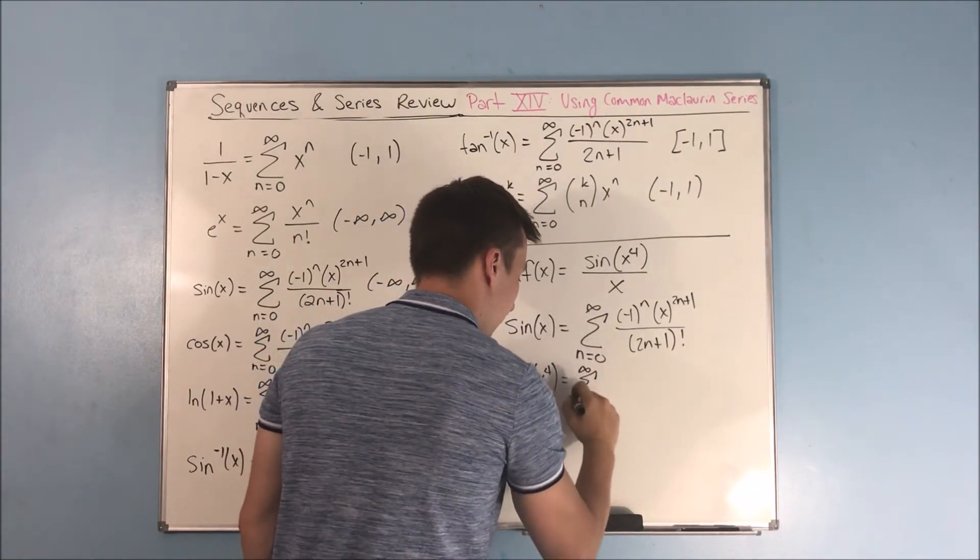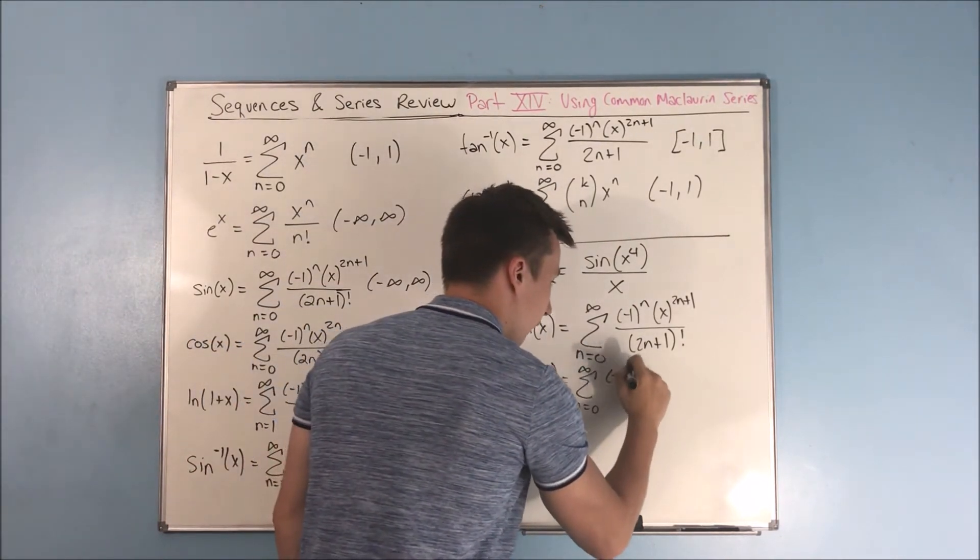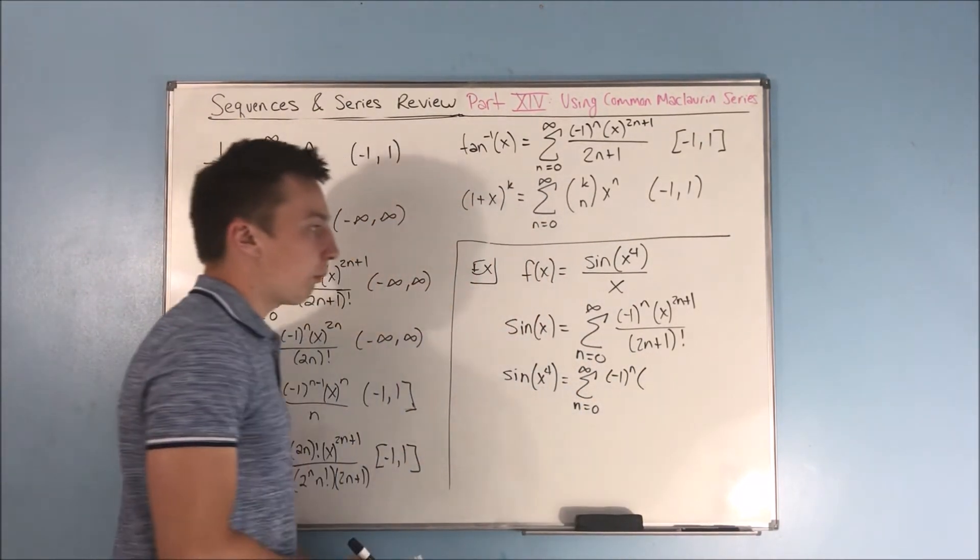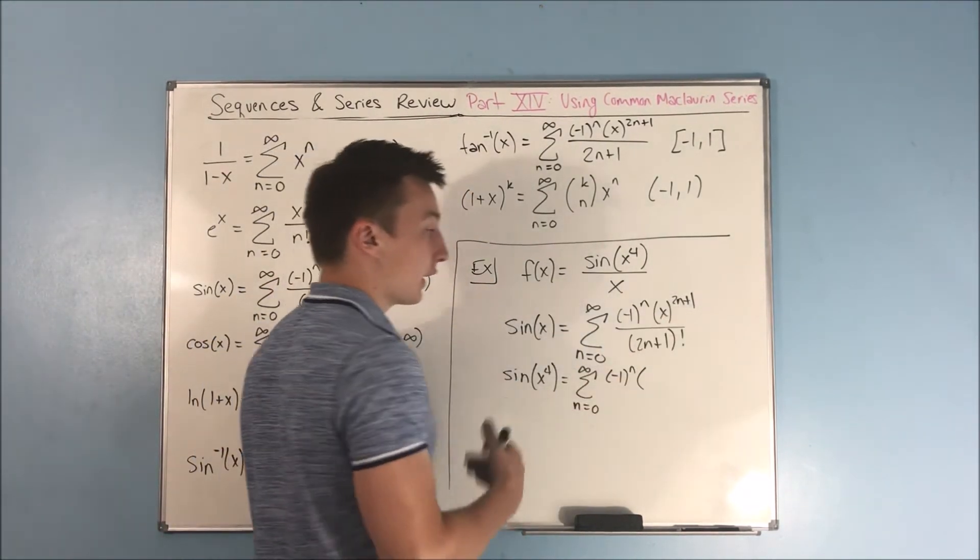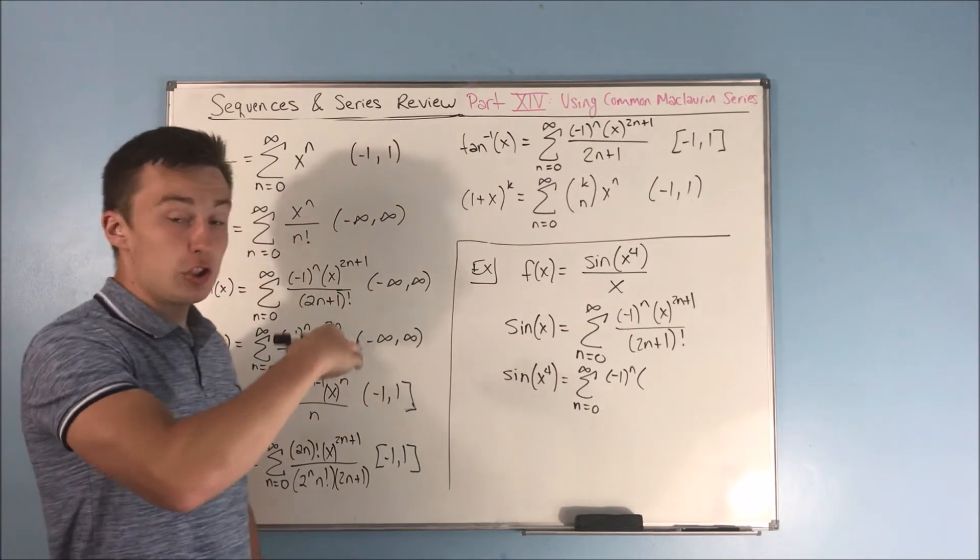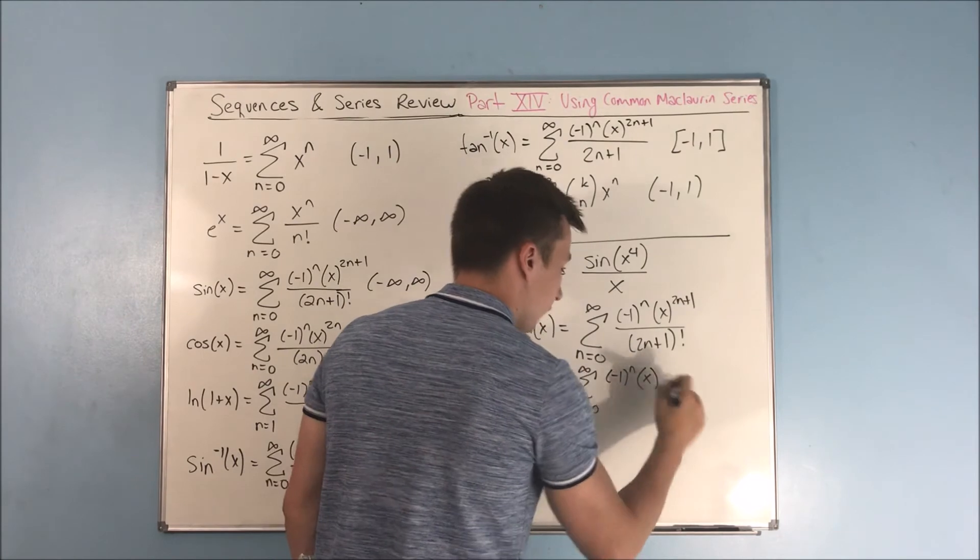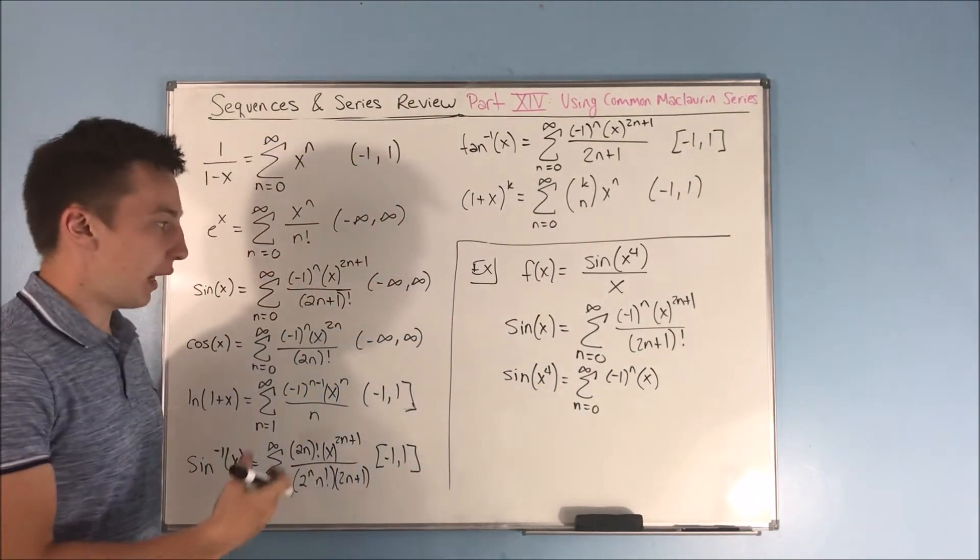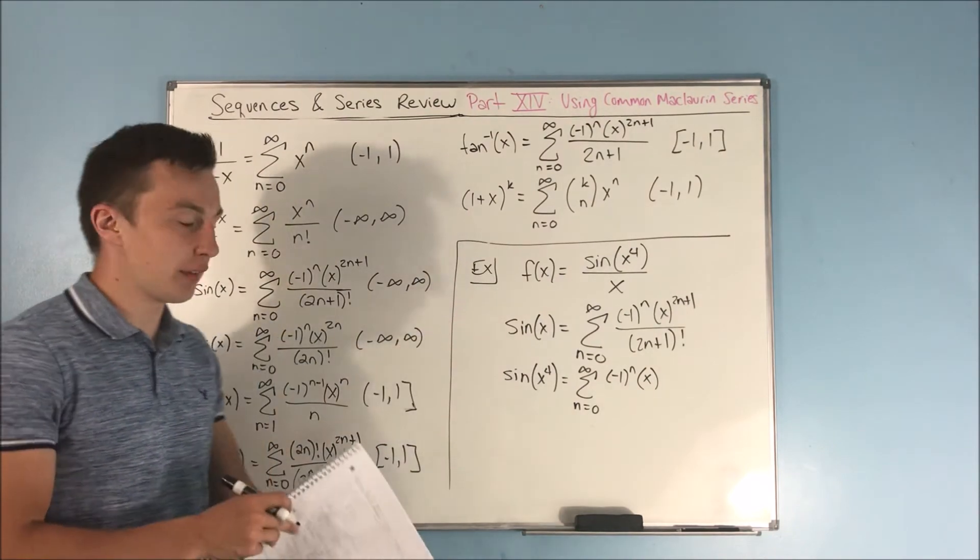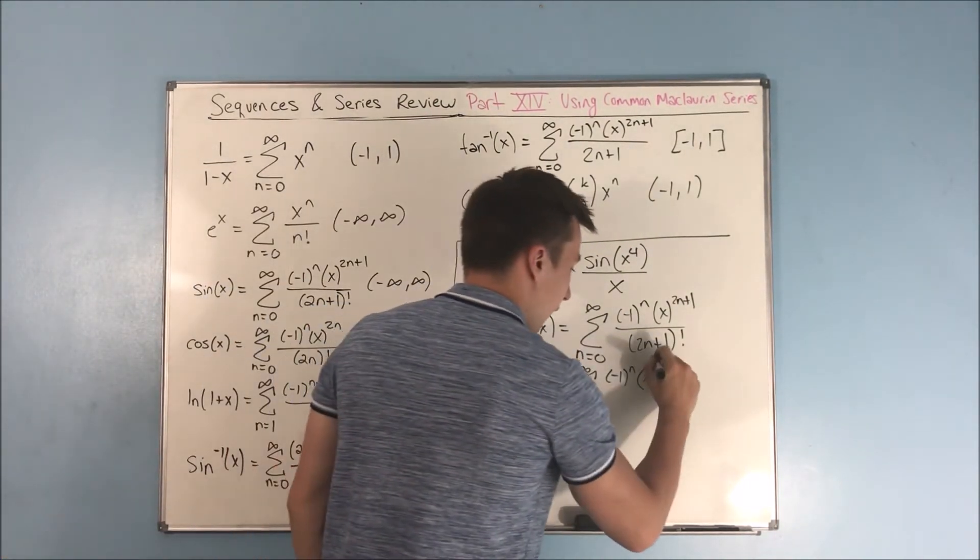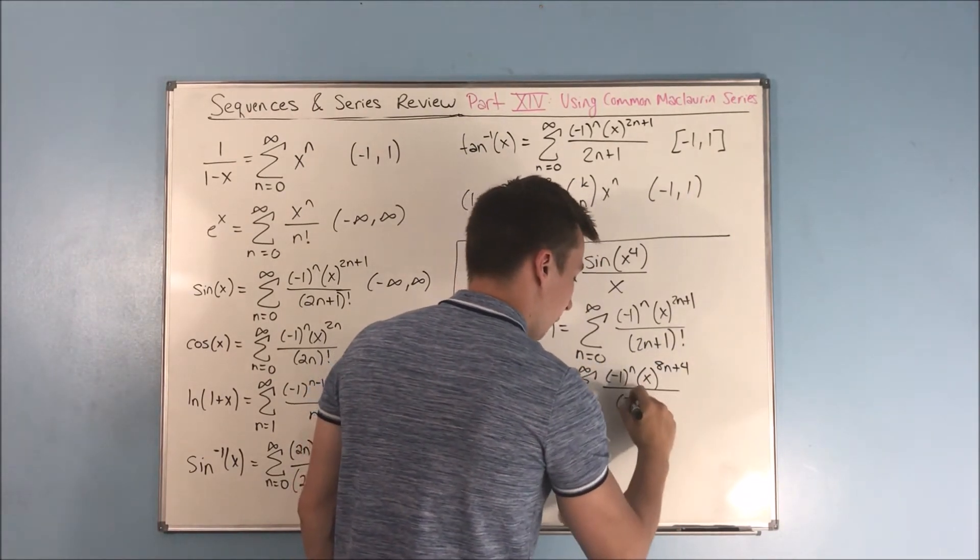So we now get the sum from n equals 0 to infinity of negative 1 to the n times... Well, if we now have an x to the 4th, that 4 is going to get multiplied through here. It's going to be 4 times 2n plus 1. So the 4 is going to have to get distributed there. That's the rules of having an exponent on an exponent. They have to get multiplied together. So we now have 8n plus 4 here.